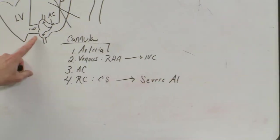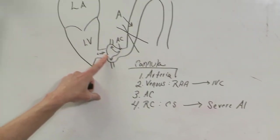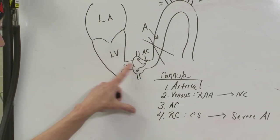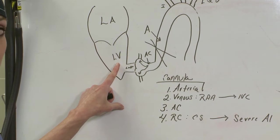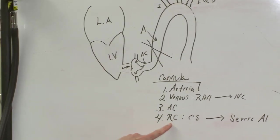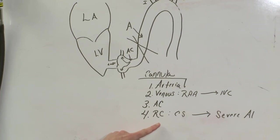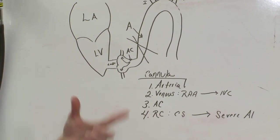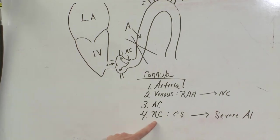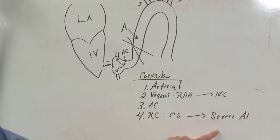So indications for that would be severe AI. So if we go back to our drawing here, if you have severe AI, when you give antegrade cardioplegia, that cardioplegia would just dump into the left ventricle and that's not effective. So what you need to do there is give retrograde, so that is the venous drainage system to the coronaries, and then by the venous system then it will stop the heart. So one reason for retrograde cardioplegia is going to be severe AI.